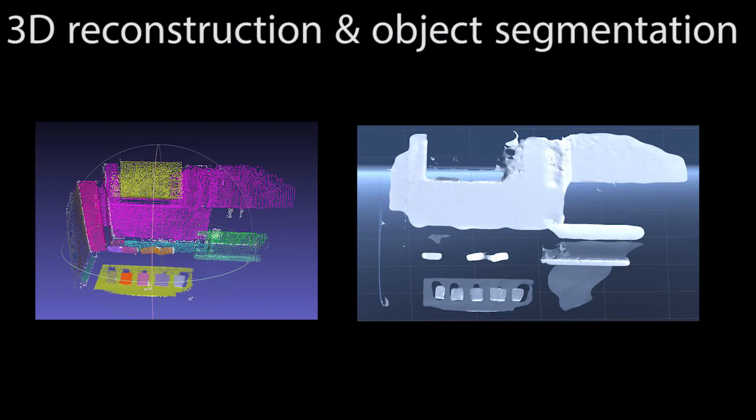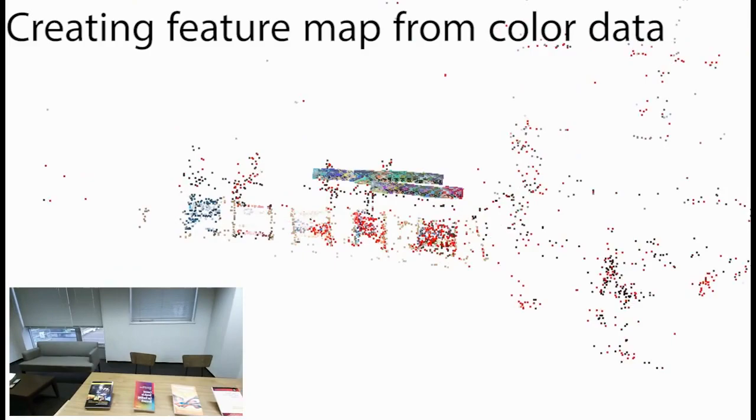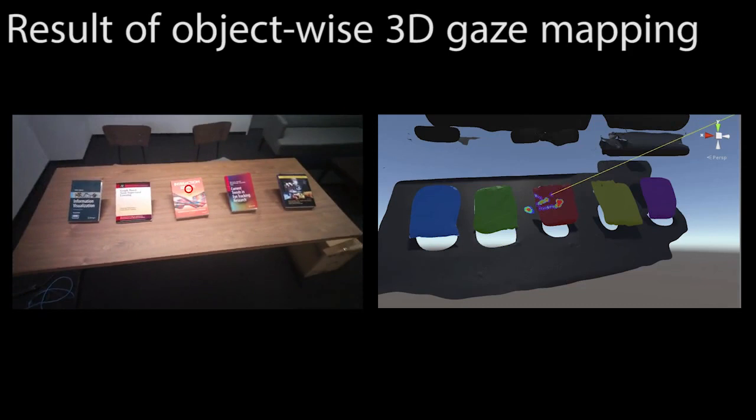The system then generates 3D surfaces of the workspace based on 3D reconstruction. The system uses color data to build a feature map of the 3D workspace for estimating eye tracker positions. Finally, the system maps gaze positions from eye trackers into the reconstructed 3D workspace.